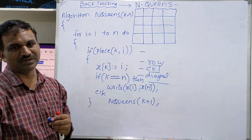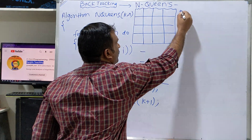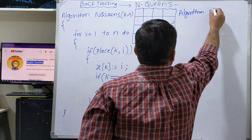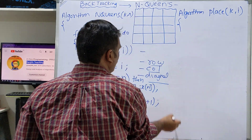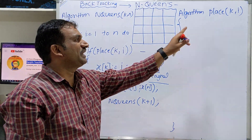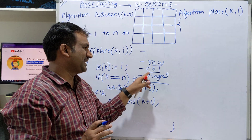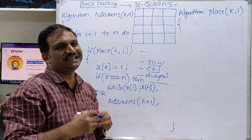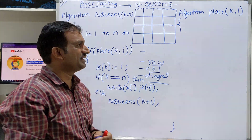Now let us write the Place algorithm. The Place algorithm checks whether we can place the kth queen in the ith column. When placing the kth queen, we must ensure no two queens share the same row, same column, or same diagonal. We have to check against all previously placed queens from 1 to k-1.